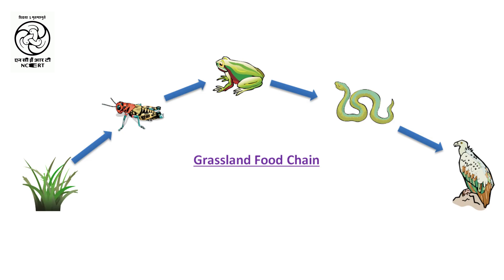Here is the grassland ecosystem, a land full of grass. This grass is eaten up by the grasshopper, the grasshopper is eaten up by the frog, and this frog is eaten up by the snake. But the vulture is here — the vulture ultimately eats up the snake, and this completes a chain.